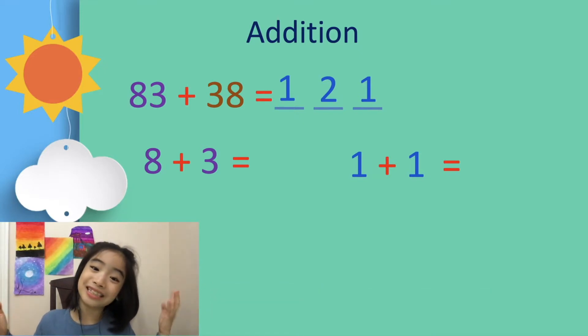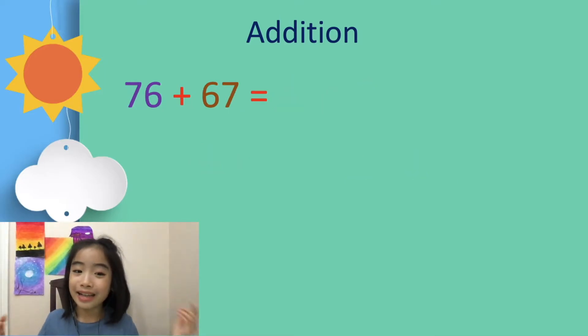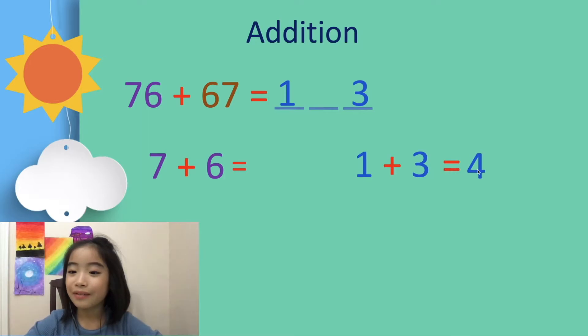Did you think that was easy? Now, let's look at another example. It's 76 plus 67. What's the answer? Let's use the same method. 7 plus 6 equals 13. We put the 1 in the 100th position. 1 plus 3 equals 4. We put the 4 in the 10th position. And voila! The answer is 143.